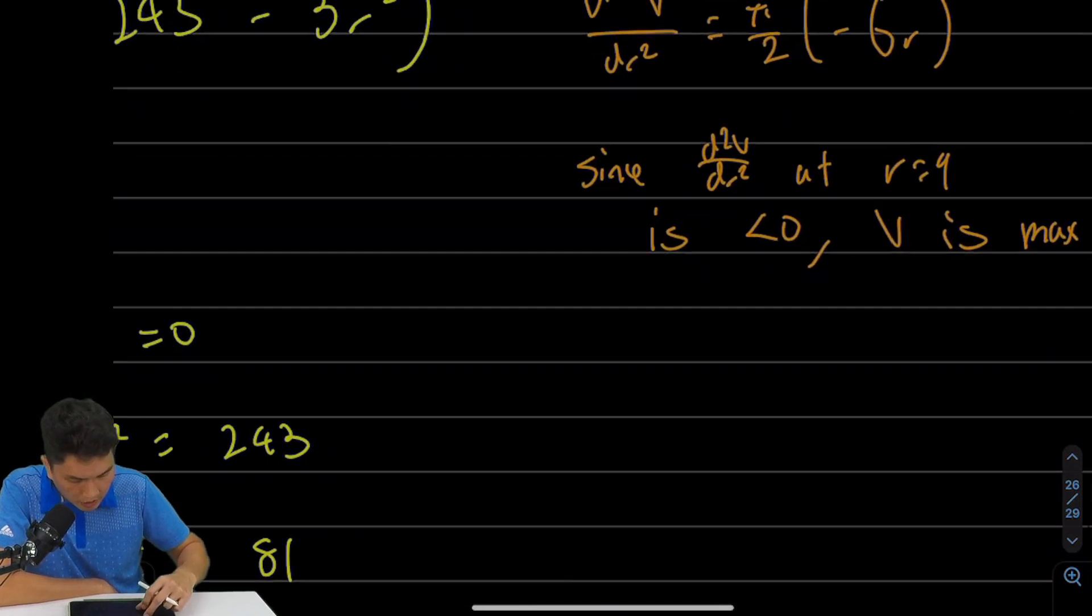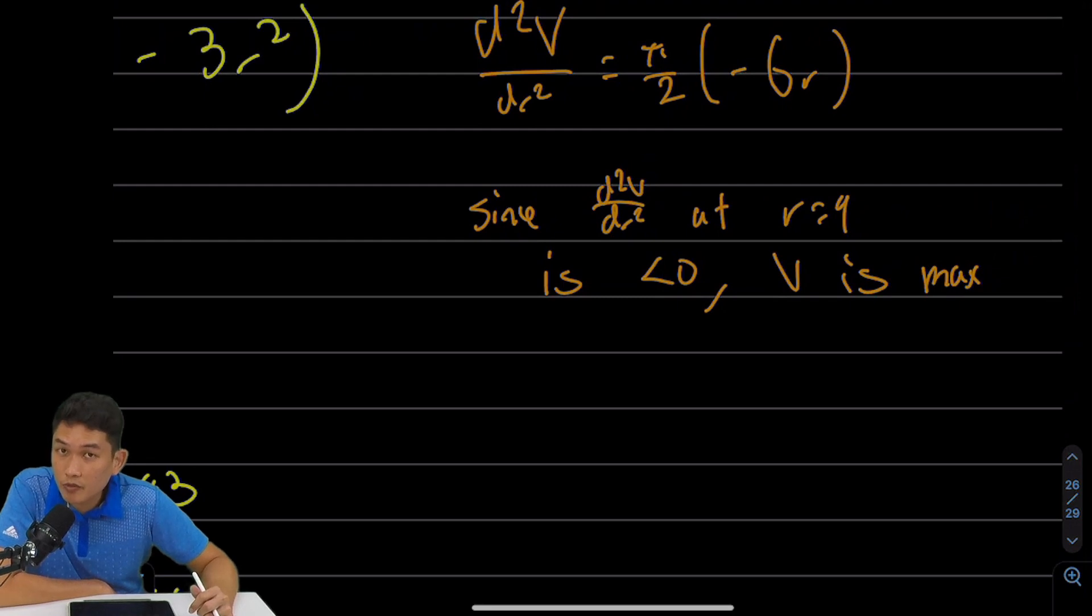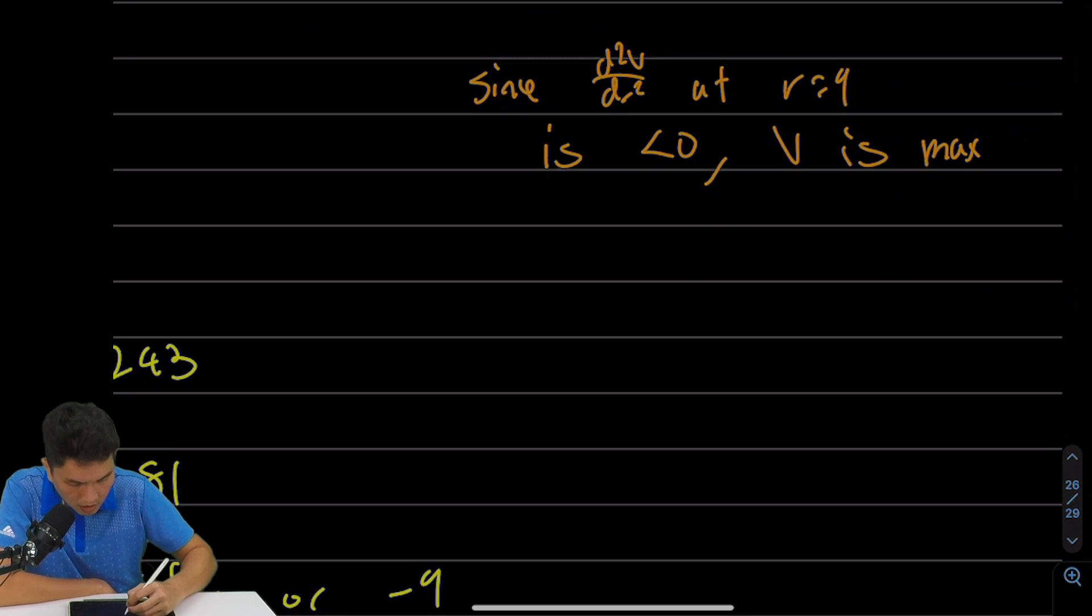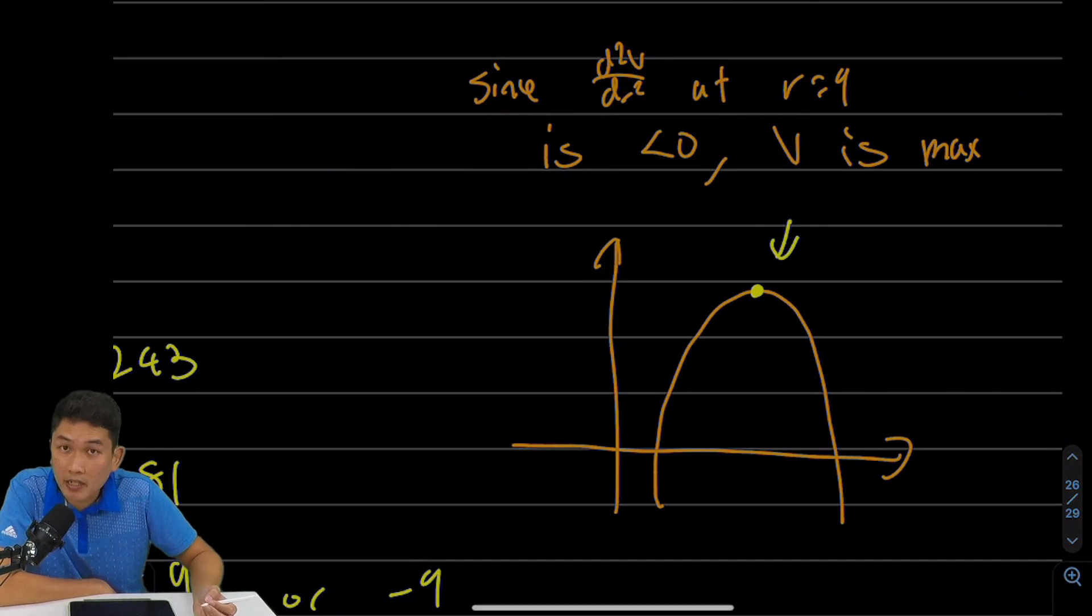So since this is a revision video, let's talk about why. Why is it when your second derivative d²V/dr² is negative, your point is a maximum? So let's take a look at the graph. A simple graph like that. This is a graph with a maximum point over here. This is the highest point, so we call it the maximum point. Why should d²V/dr² be 0?